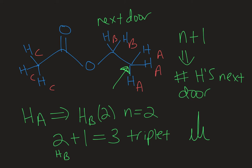So this signal is called a triplet, split into three peaks. All signals in NMR are symmetrical — you start with the smallest peaks on the outside and the biggest peak in the middle. For odd-numbered peaks like a triplet, the tallest peak is in the middle and they taper down at the sides. So HA would show up as a triplet.